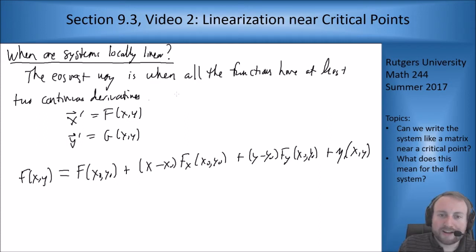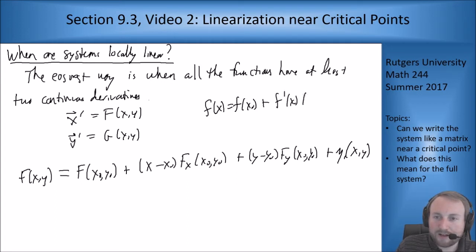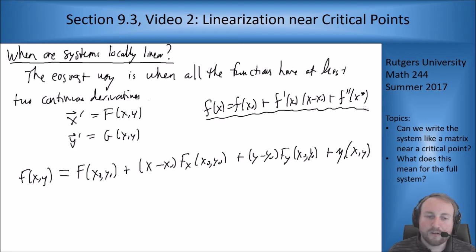This should look like the one-variable case: f(x) equals f(x₀) plus f'(x₀) times (x-x₀) plus f''(x*). This is your linear approximation, your first order Taylor series approximation. With two variables you have both an f_x and f_y term to account for, and η is a different function incorporating all the second derivatives.